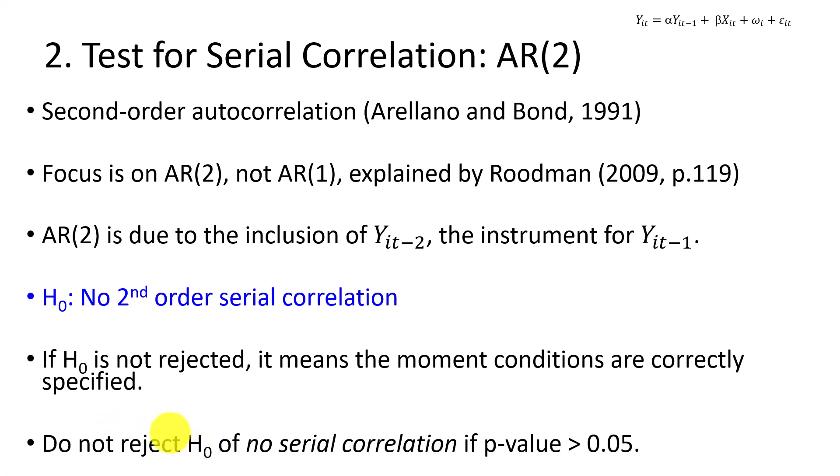And conventionally, we're not going to reject the null hypothesis if our p-value is more than 0.05.